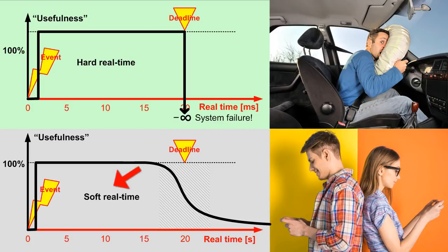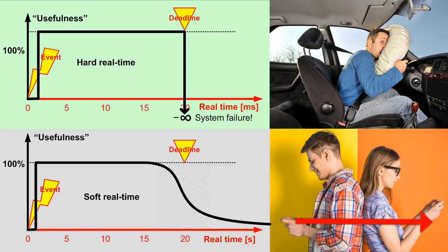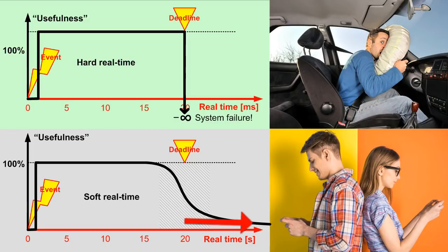But there are also soft real-time systems, where timeliness is also important, but the deadline is not as firm. For example, a text message is expected to be delivered somewhat timely, say within 20 seconds, but it is still useful much longer, although its usefulness diminishes with time. In the following discussion, I will focus on hard real-time systems.